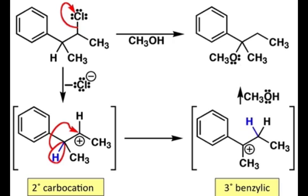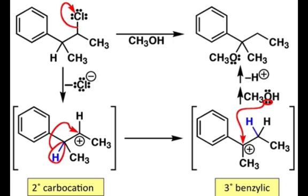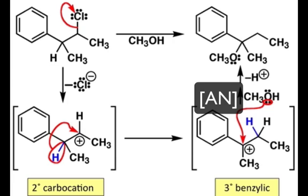We have this high-energy carbocation intermediate, and we also have a nucleophile in solution — methanol. So therefore, we have an AN step, an association of this nucleophile. That oxygen lone pair attacks that carbocation in an N-to-A sigma-type interaction, followed by a proton transfer step to lead to our final product. The elementary steps involved in this mechanism were DN, followed by a 1-2-R, then AN, and then PT — and those elementary steps form the product we see from this SN1 mechanism.